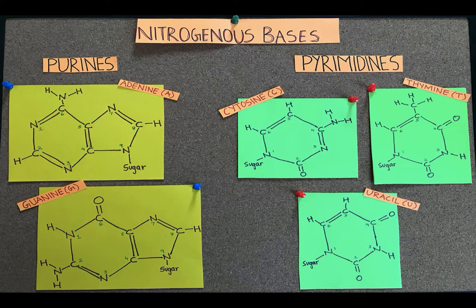Adenine and guanine are purines and have two rings. Cytosine, thymine, and uracil are pyrimidines and have one ring. Thymine is present in DNA while uracil is present in RNA.